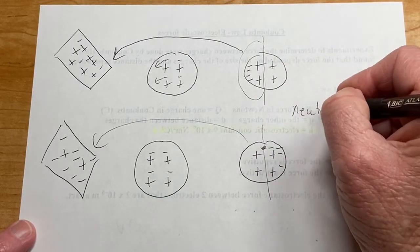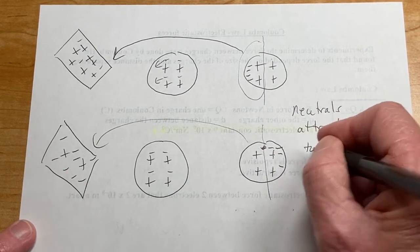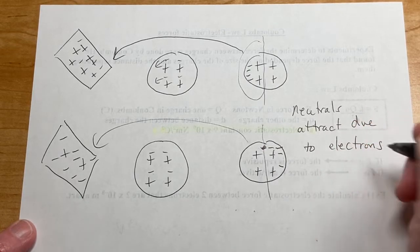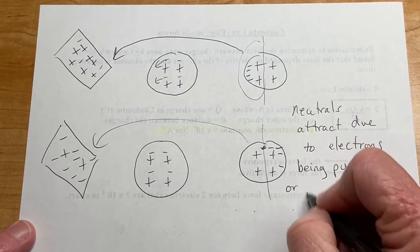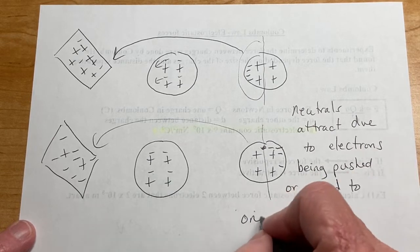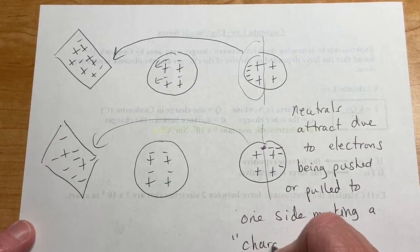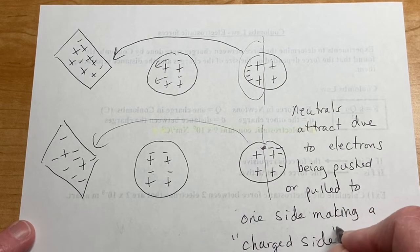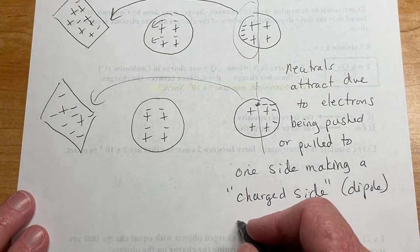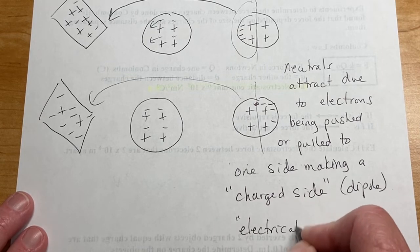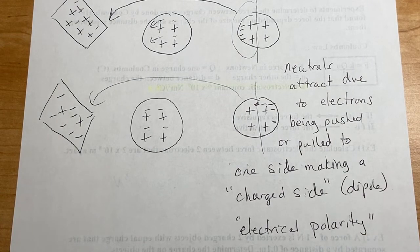Okay, so neutrals attract due to electrons being pushed or pulled to one side. I'm making it, I'm going to call it a charged, it's not really charged, it's a charged side. Also a dipole. Okay. Some people have a term that they call it electrical polarity. Can't calculate the force, but you certainly can observe it.